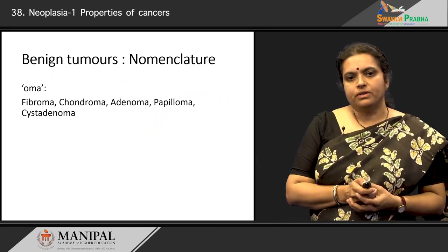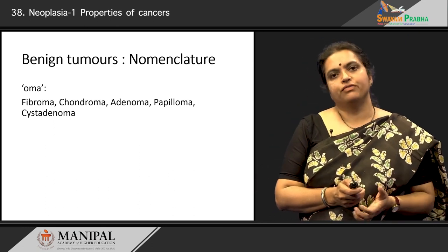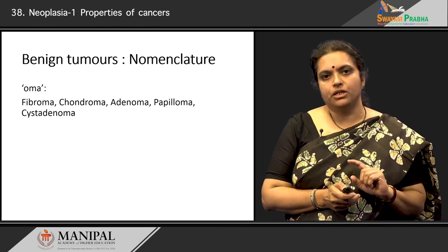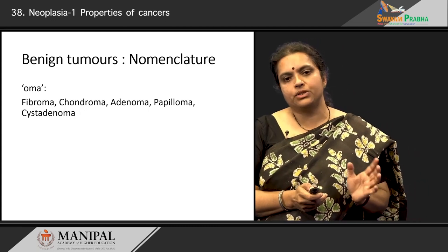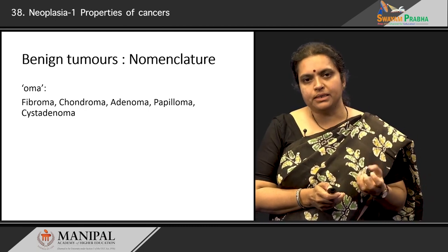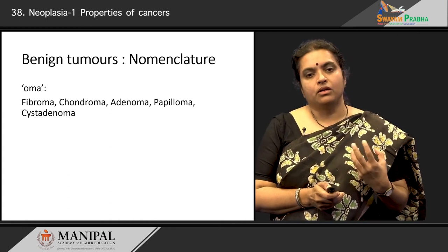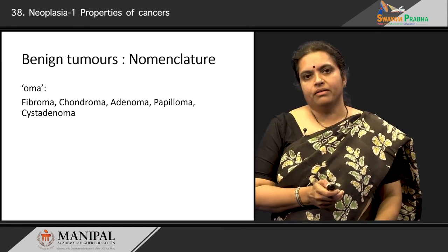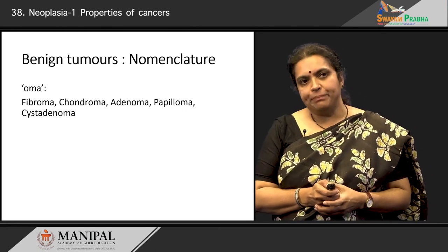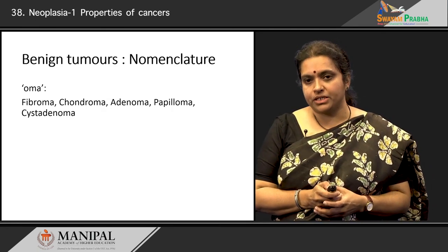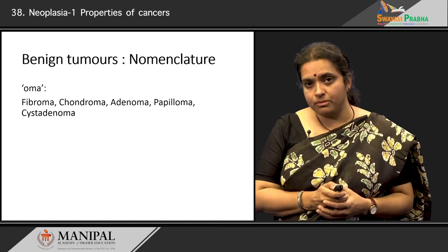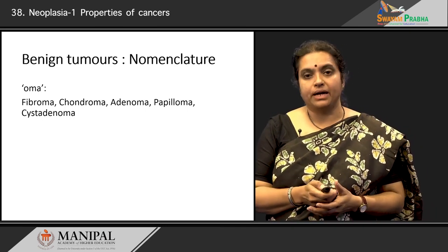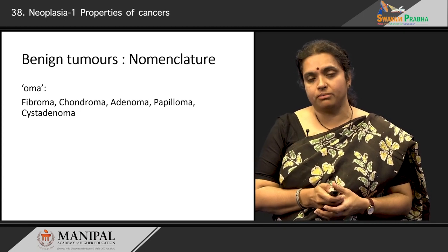There is a separate set of nomenclature for benign and malignant tumors. For benign tumors we attach an -oma suffix. For instance, fibroma is a tumor arising from fibrous tissue; chondroma has cartilaginous differentiation; adenoma is where the benign tumor forms gland-like structures; papilloma is where there are finger-like projections on a surface, such as those on the skin. If there is a cyst-like formation you have what are known as cystadenomas, which are quite common in the ovary.